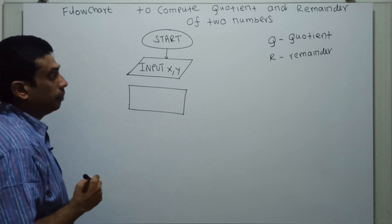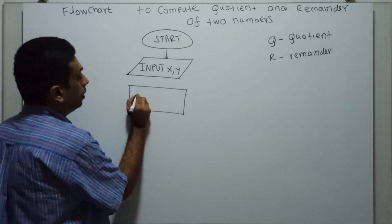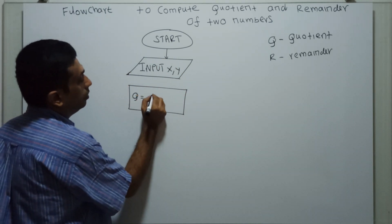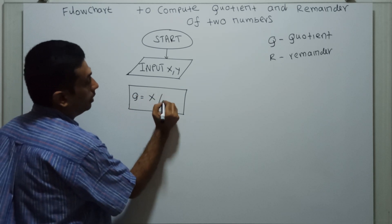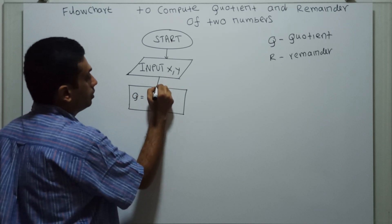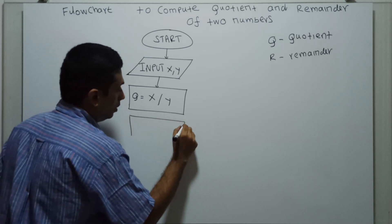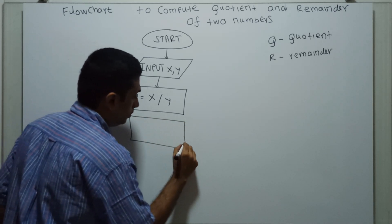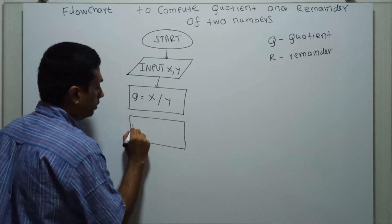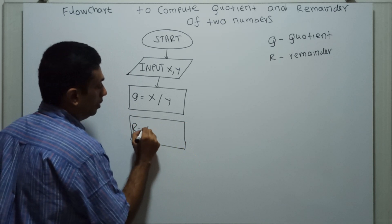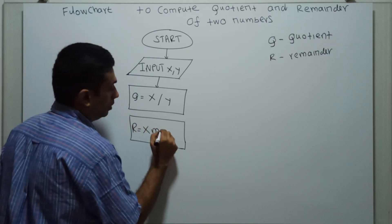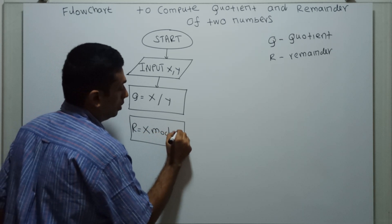Now I am computing quotient equal to x divided by y. I am calculating remainder equal to x mod y.